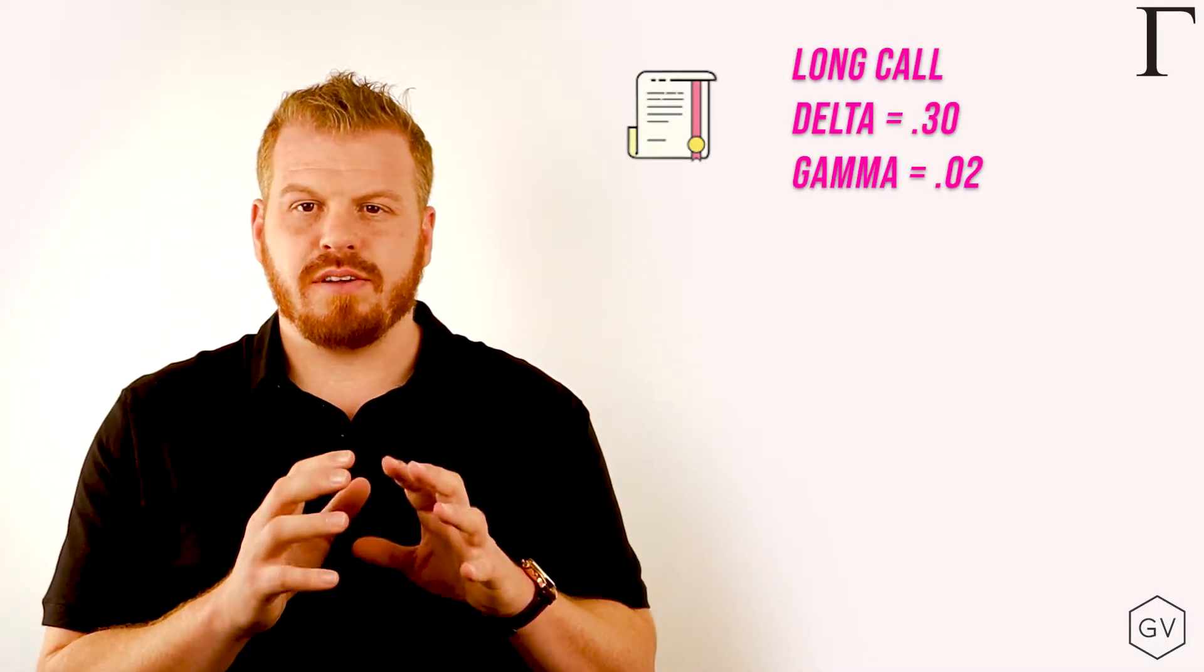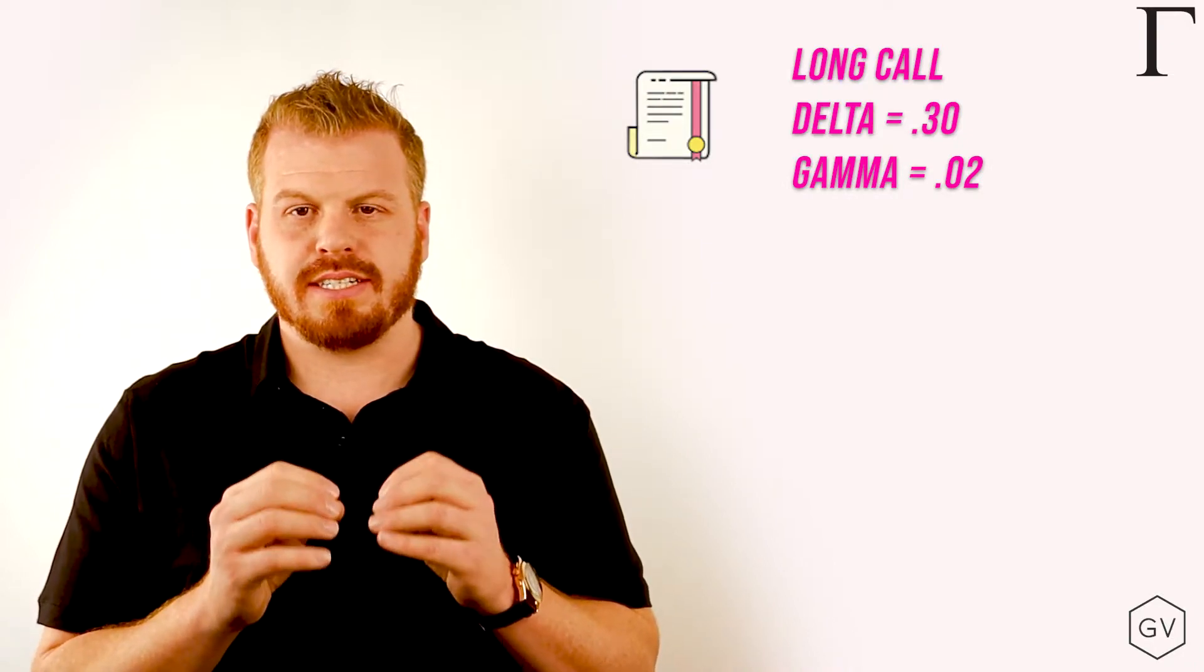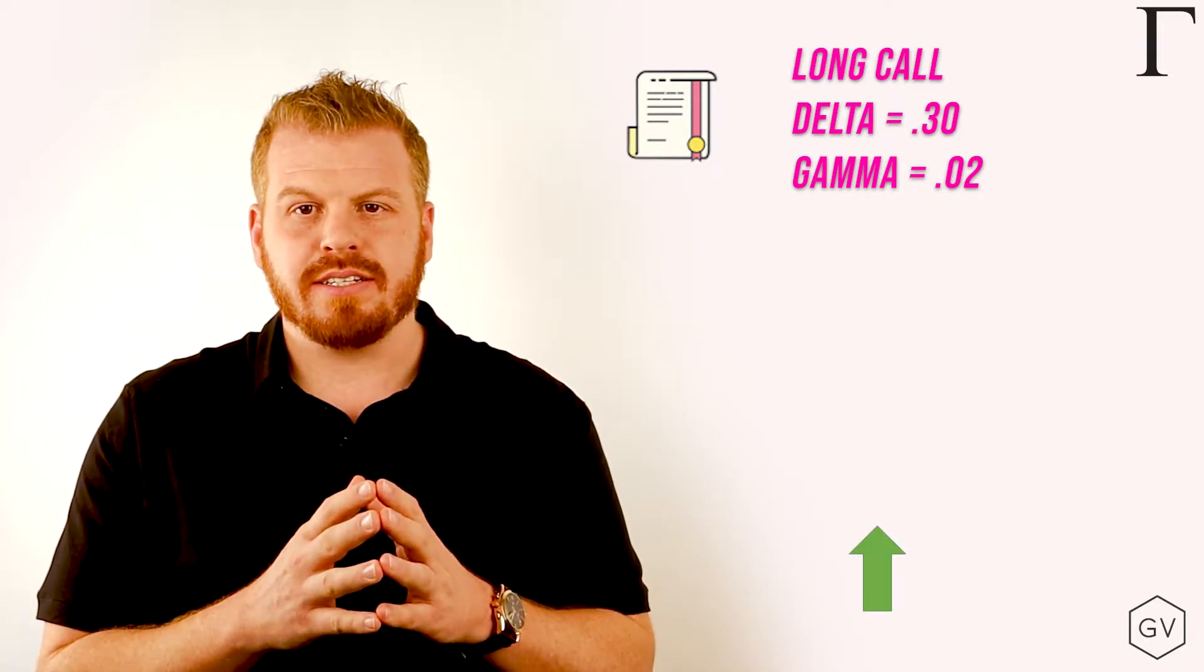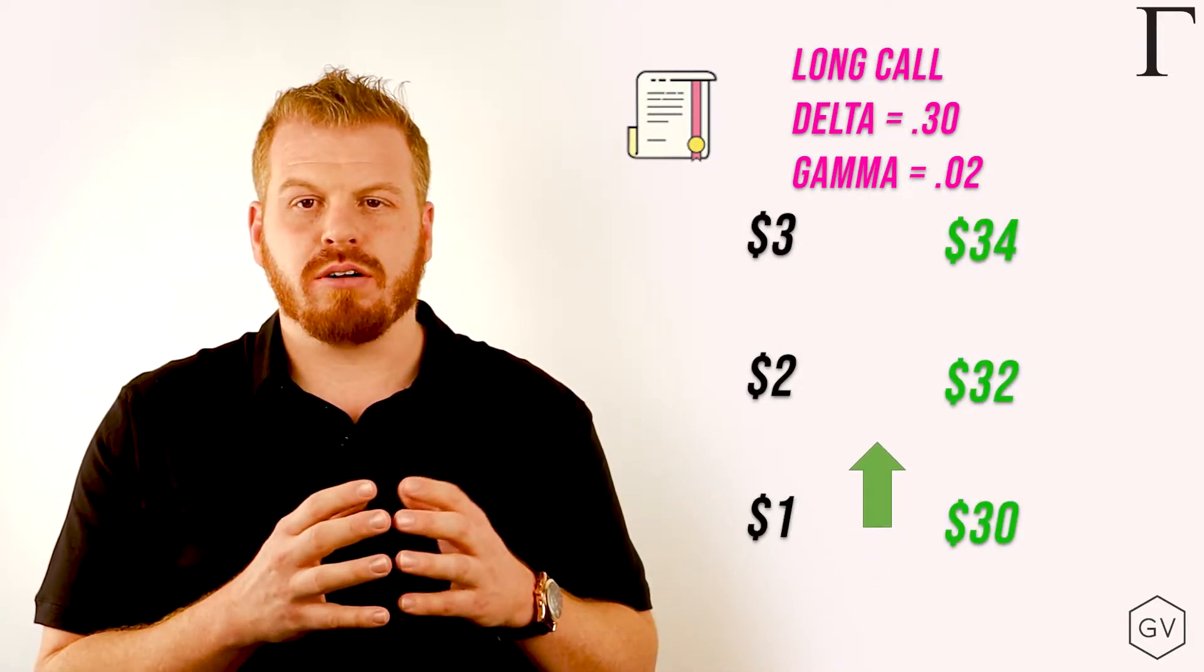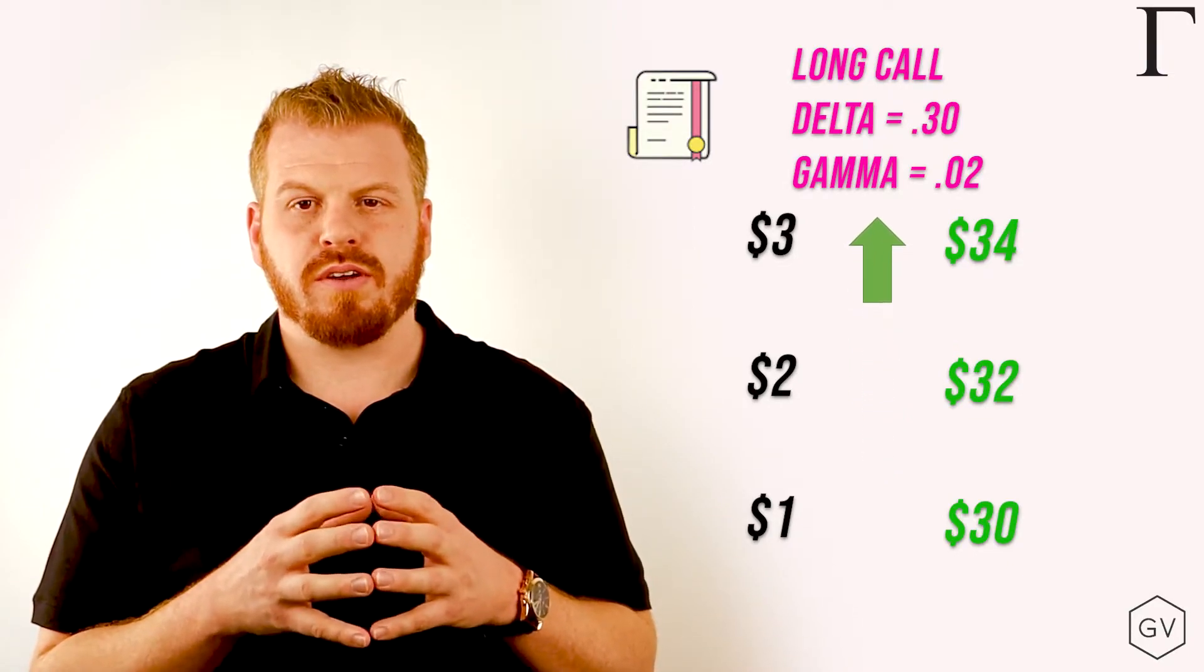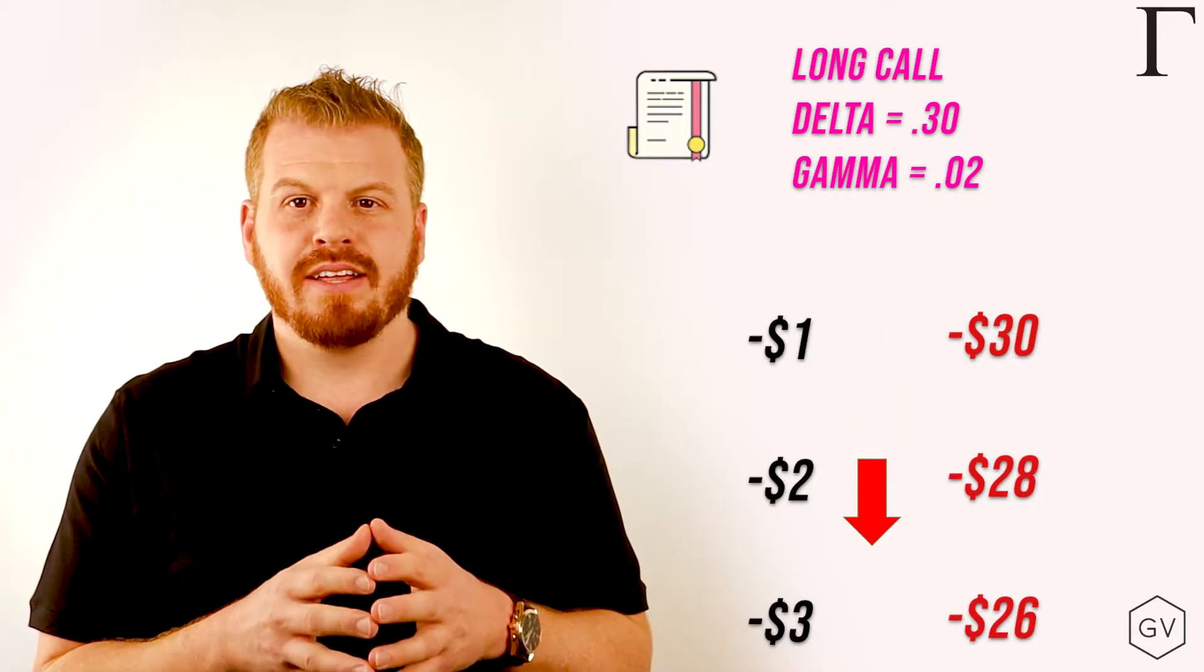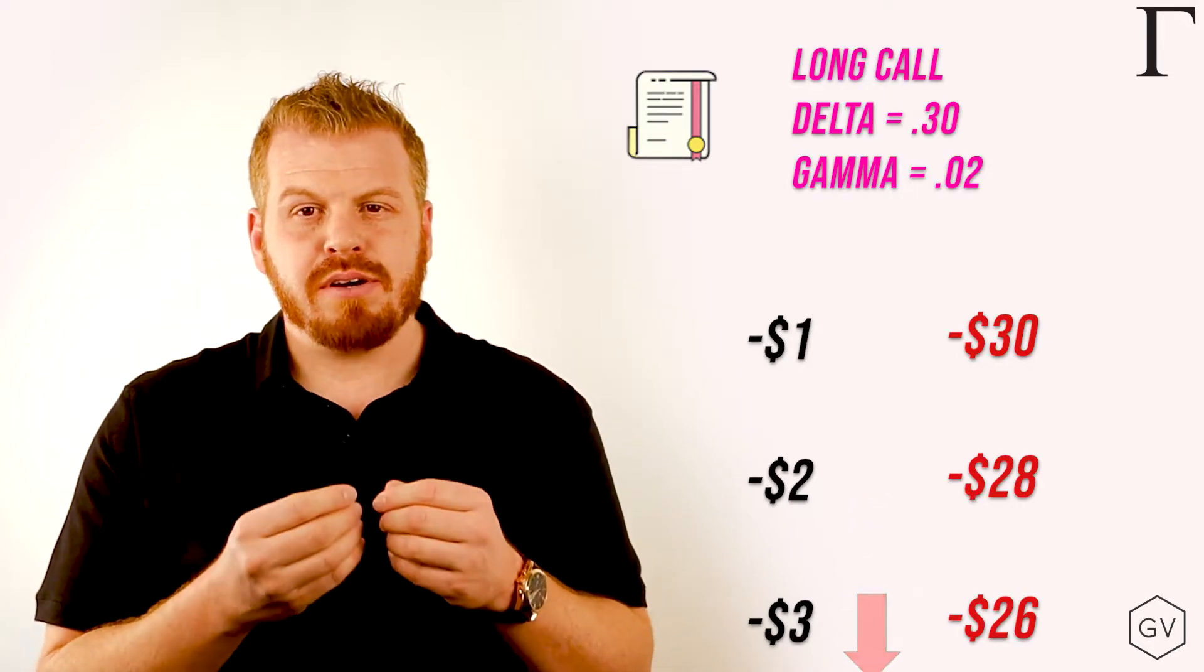Let's see this with a call. If you own a call that has a delta of 30 and a gamma of 2, and let's just assume that gamma remains constant throughout this example, well then as the underlying rallies, your option will gain $30 for the first point, $32, then $34, so on and so forth. But as the underlying falls, you'll lose $30 for the first point, then $28, then $26. Gamma in this case is said to be working in your favor, you're long gamma.